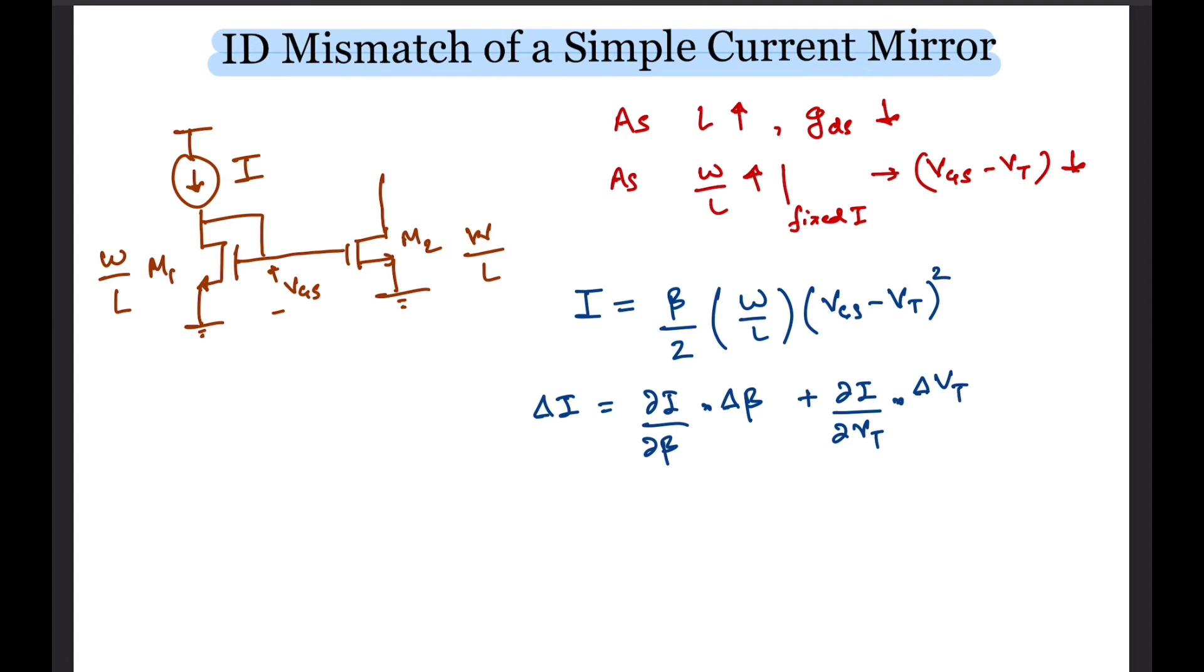Now del I over del beta is simply this factor which is I over beta. To compute del I over del VT, recognize that mathematically a small change in VT is like a small change in VGS with VT constant, and del I over del VGS is GM, so del I over del VT would be minus of GM.